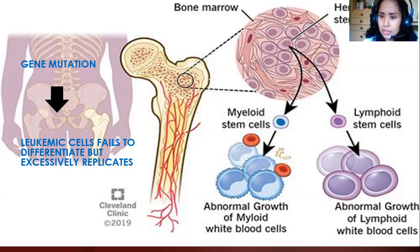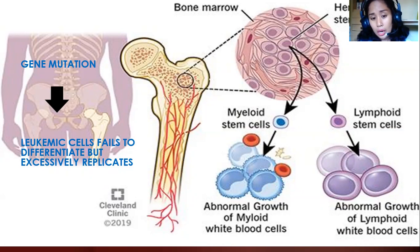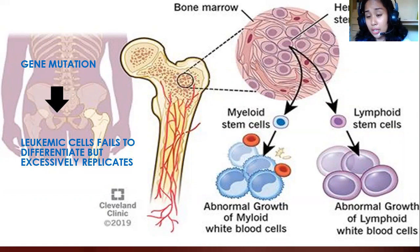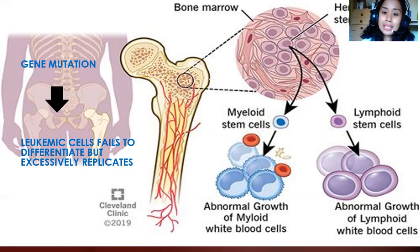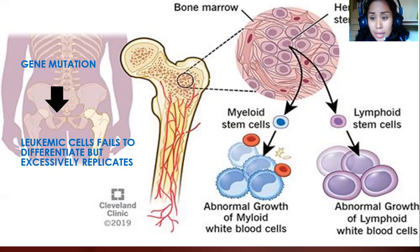Your leukemic cells can affect your myeloid stem cells or your lymphoid stem cells. Lymphoid stem cells can affect your lymphocytes — your B cells and T cells, with B cells differentiating into plasma cells that produce antibodies. When we talk about acute lymphoid leukemia, the cancer cells are mostly your lymphoid stem cells. Our first topic, however, will be acute myeloid leukemia.